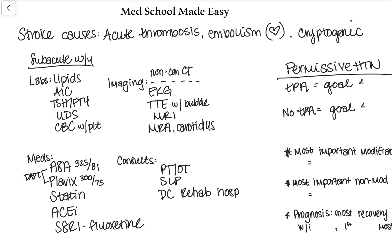In this video, we are going to discuss the subacute workup of stroke and then just some quick stroke facts. I did a separate video about acute stroke, so if you haven't watched that, definitely look that up first. So after a patient comes in and they've had an acute stroke, you've either given TPA or aspirin, evaluated them for thrombectomy, and then you start the subacute workup. This typically is about 24 hours after they present to the hospital, after you've already stabilized them and they're on the neuro service. You can kind of just see these as relatively routine regardless of why they're coming in.